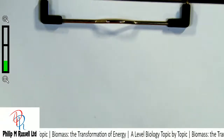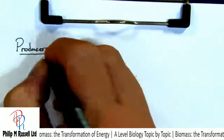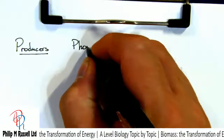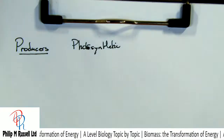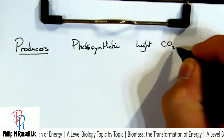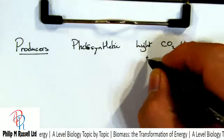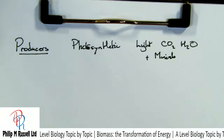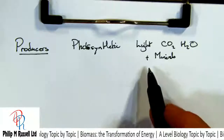Our first group are the producers. They're typically photosynthetic — they produce most of their energy from light, and they combine that with CO2, water, and a few minerals. That is where everything starts. Nothing that you take in hasn't been made by a producer.